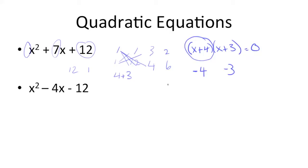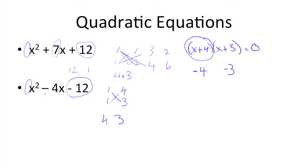So knowing this all, we can apply the same concepts to this next question. Here we know the coefficient is 1, so we have 1 and 1. And here we know this is negative 12. So we know that whatever we get, we'll have to have a negative sign in front of it. So 1 times 3, 4 times 1 is 4 and 3. And here we have a negative 4. Is there any way to manipulate 4 and 3 to get negative 4?